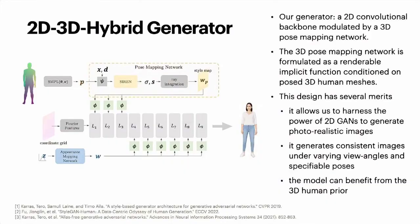Our generator is a 2D convolutional backbone modulated by a 3D pose mapping network. The 3D pose mapping network is formulated as a renderable implicit function conditioned on pose 3D human meshes. This design has several merits: it allows us to harness the power of 2D GANs to generate photorealistic images, generates consistent images under varying view angles and specifiable poses, and the model can benefit from the 3D human prior.